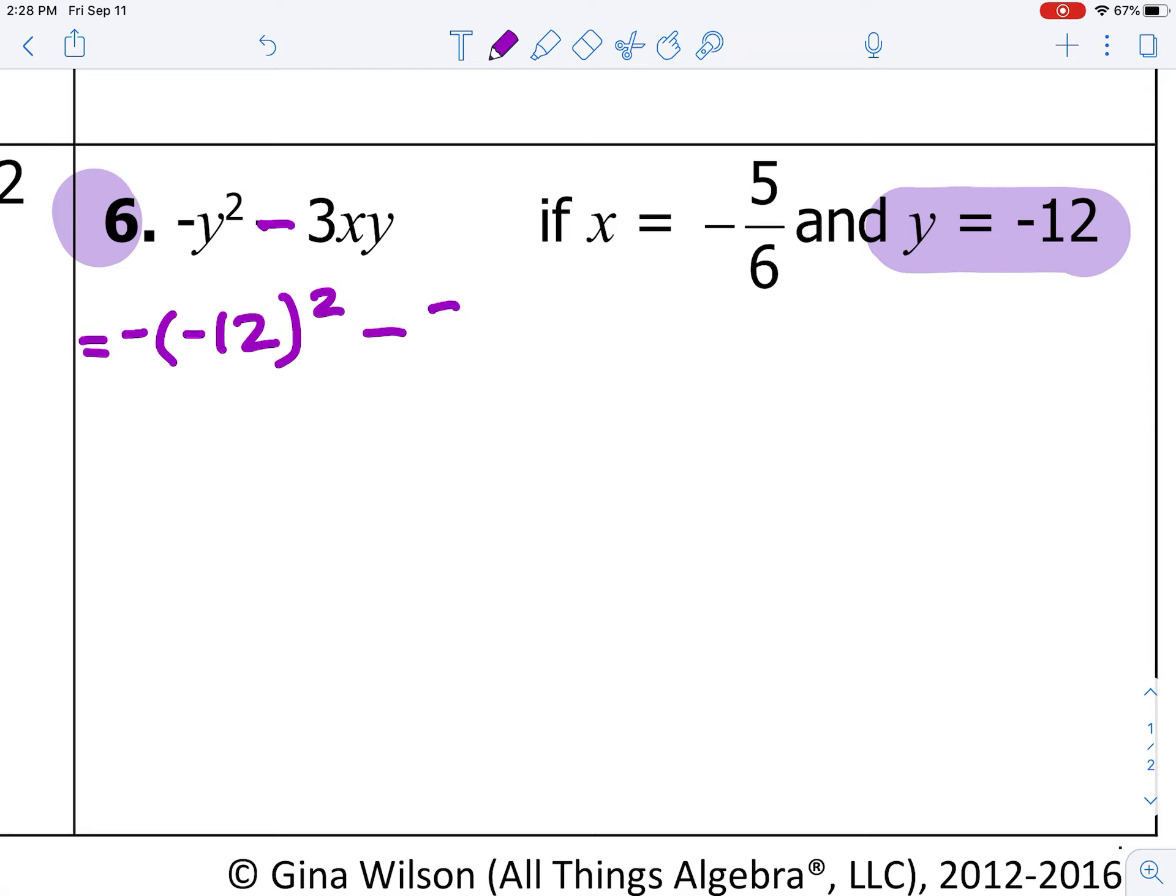Then, I'm going to copy down the minus sign. I'm going to copy down the 3. This is 3 times X times Y. So, I need to know what X equals. X equals negative 5 over 6. And then, I see another Y. So, I need to put my substitution of negative 12 in one more time.